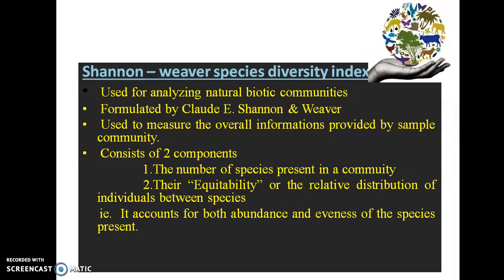The next index is the Shannon-Weaver species diversity index. This is generally used for analyzing the natural biotic communities and was first formulated by Claude E. Shannon and Weaver. It is generally used for measuring the overall information provided by the sample community. The Shannon diversity index consists of two components: the number of species present in a community, and the equitability or relative distribution of individuals between species.